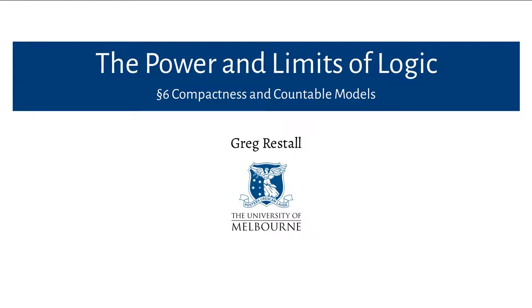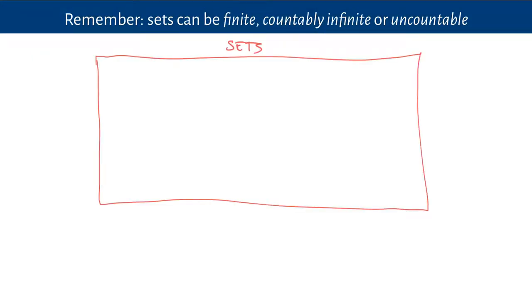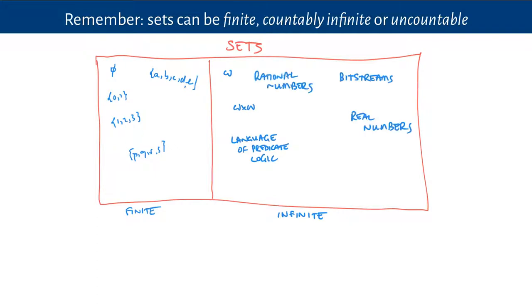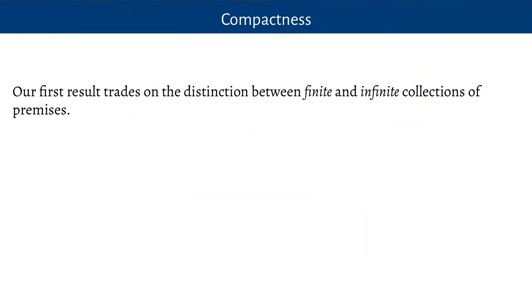In this video we're going to look at two interesting limitative results about what you can express in the language of first-order predicate logic. We've already seen that sets can be finite or infinite, and among the infinite sets they can be either countable or uncountable. The two results we're going to look at will tell us something about both of these boundaries.